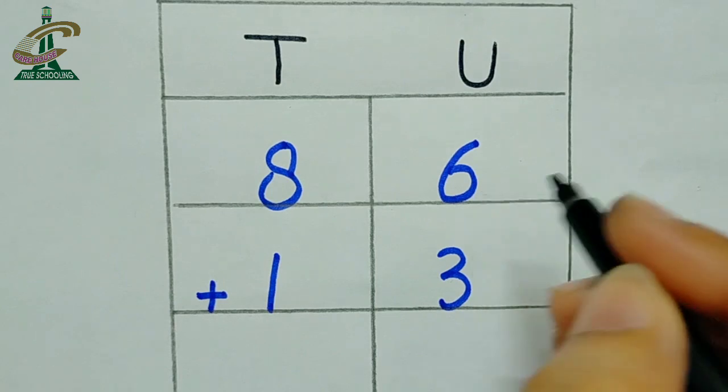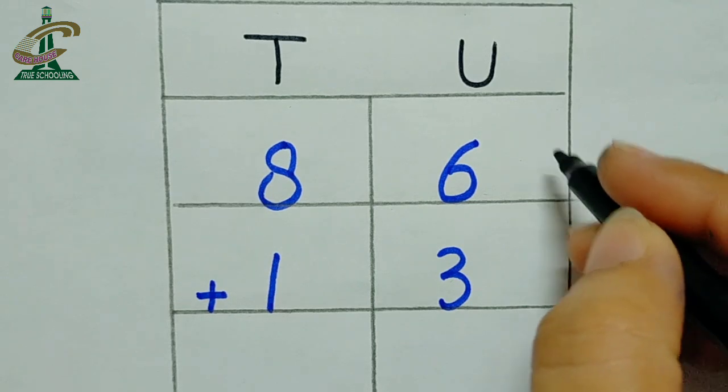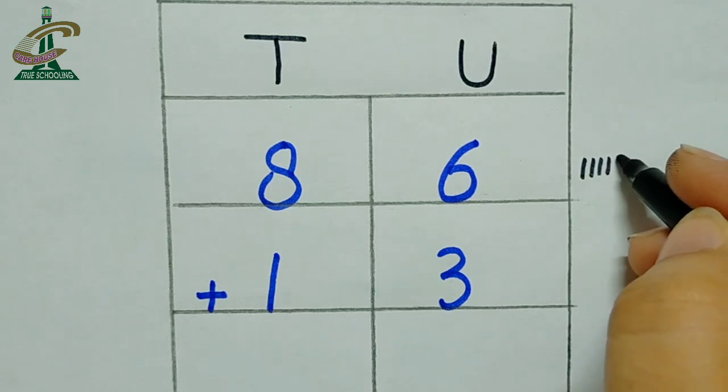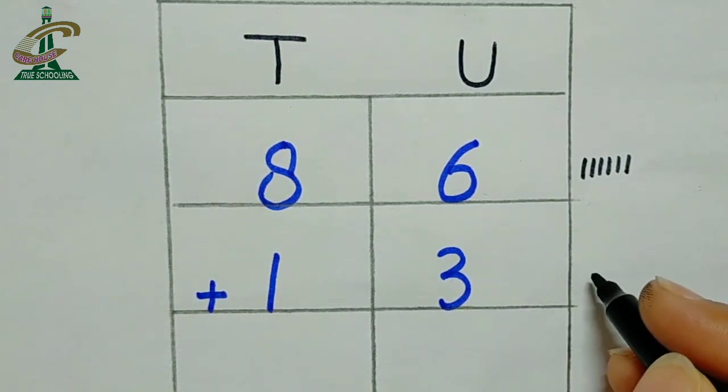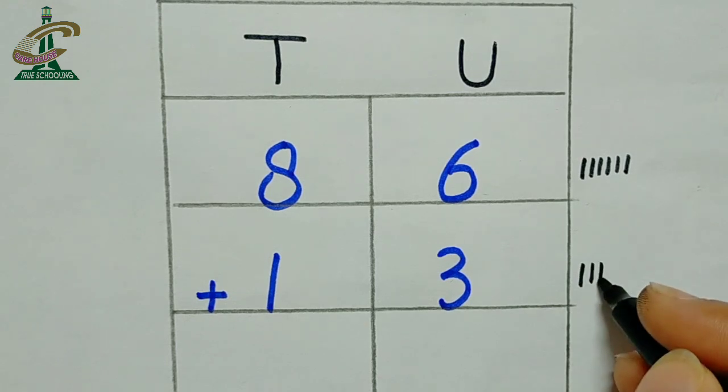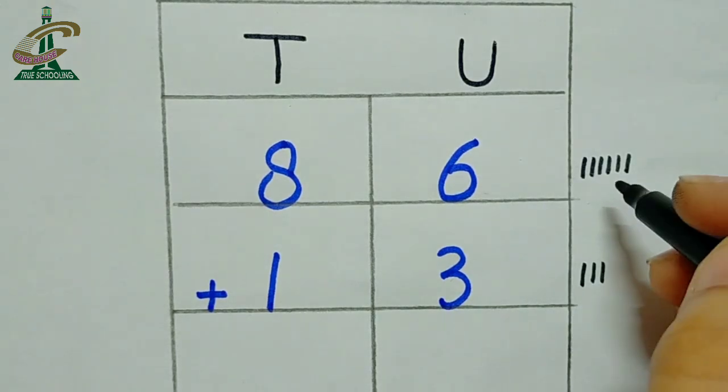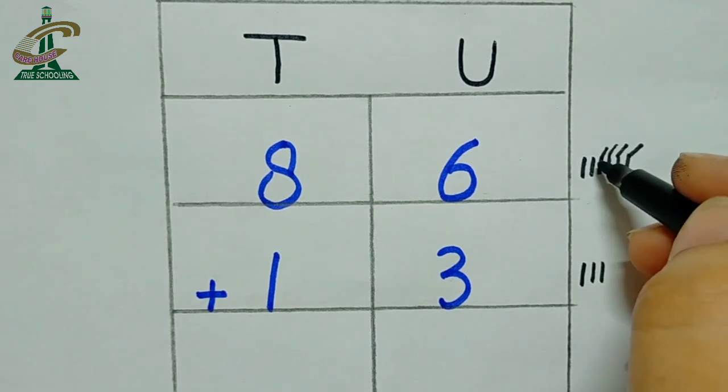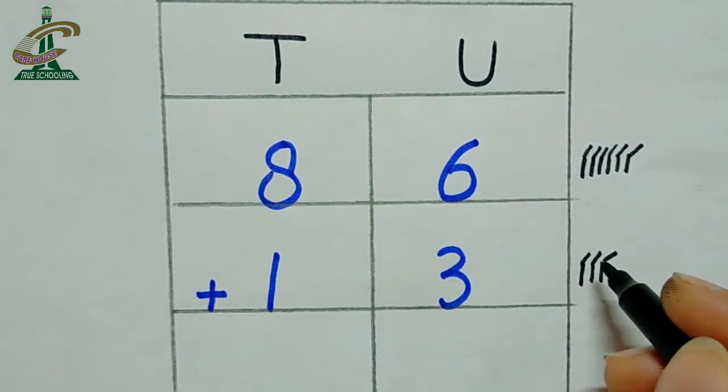There are 6. Which number is this? This is 6. How many lines you will make? We will draw 6 lines. 1, 2, 3, 4, 5 and 6. And downside, which number is this? This is 3. And how many lines you will draw? 3 lines. 1, 2, 3. Count all the lines with me. 1, 2, 3, 4, 5, 6, 7, 8 and 9.